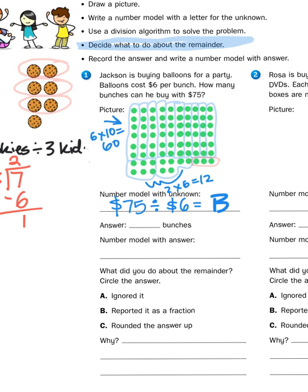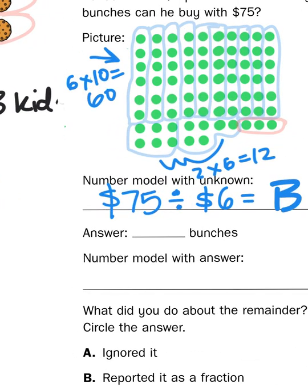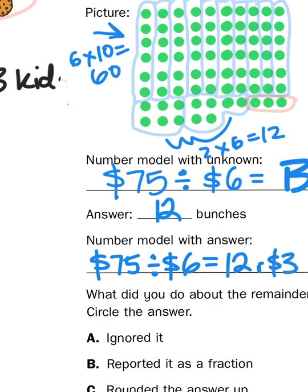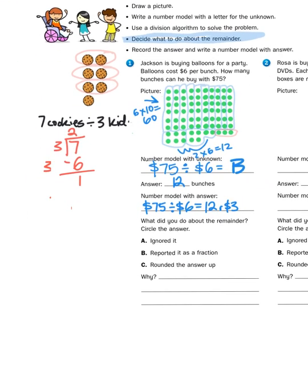So let's take a look at our remainder. So if I divide 75 into groups of 6, I'm going to have a total of 12 groups or 12 bunches of balloons. So let me rewrite this number sentence. So I need to divide 75 dollars into groups of 6 and I can get 12 bunches with 3 dollars left over. So the question then becomes, what do I do with those 3 dollars? My choices are I can ignore them, I can report it as a fraction, or I can round the answer up.